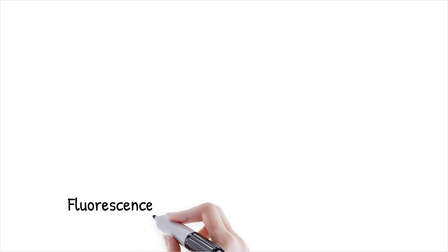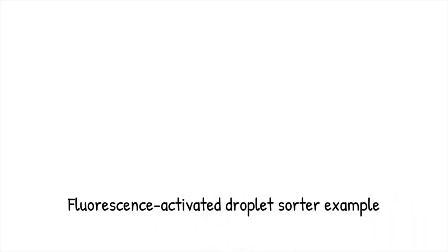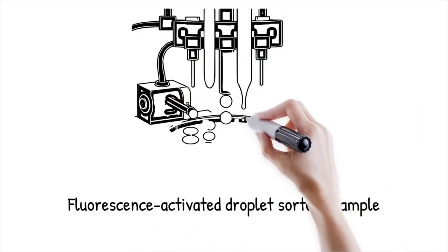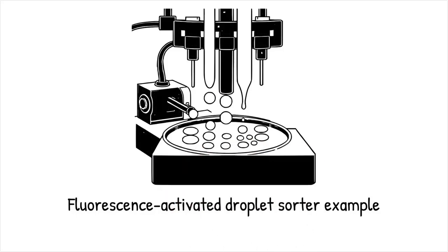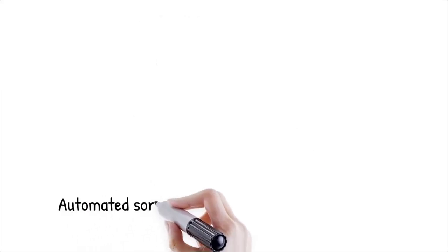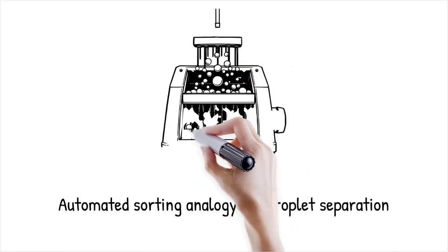A fluorescence-activated droplet sorter can separate droplets containing a fluorescent signal from those without. It is like an automated sorting machine at a recycling plant that segregates items based on color and shape.